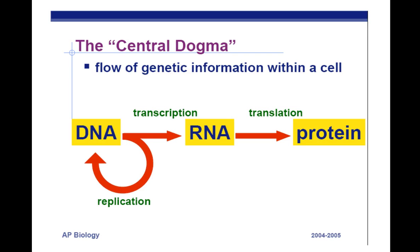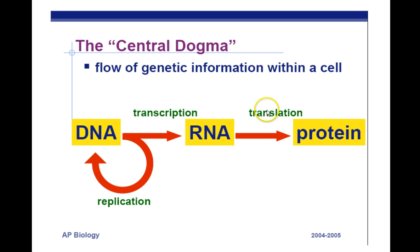Here's the central dogma — the basic flow of genetic information within a cell. DNA making a copy of itself is called replication, and that happens in the nucleus. DNA making a copy of RNA is called transcription. RNA being used to make proteins is called translation. A memory trick: there are two A's in translation — and proteins are made of amino acids, AA. Transcription has one A. If you find another trick, feel free to share it.